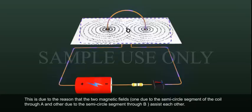This is due to the reason that the two magnetic fields, one due to the semicircle segment of the coil through A and other due to the semicircle segment through B, assist each other.